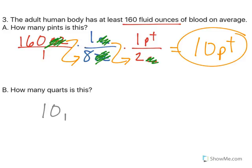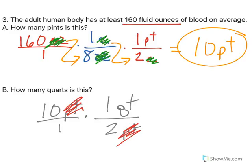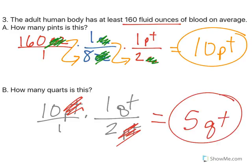Letter B says, how many quarts is that? Well, if I have 10 pints, I know that two pints is one quart. Again, pints on top, cancel out with pints on bottom. 10 divided by 2 is 5. So, you have approximately 5 quarts of blood pumping through you at this moment. That's pretty exciting.